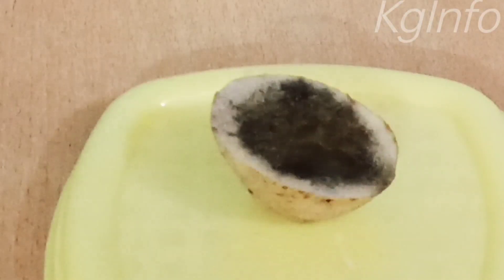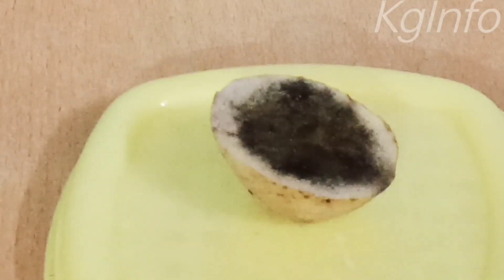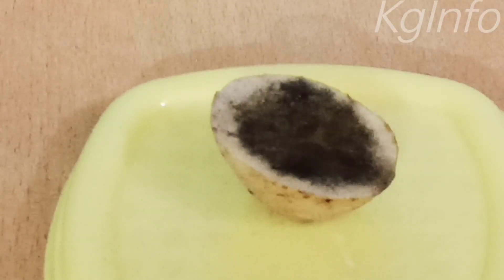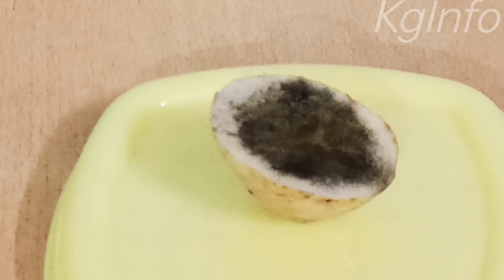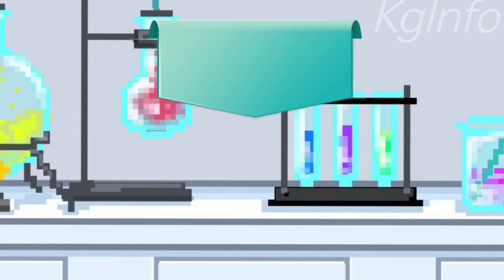Can you observe any change in the color of the potato? Yes, you can. The color has changed to black. The black color indicates that the potato contains carbohydrates.